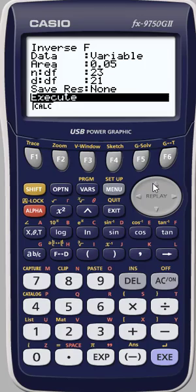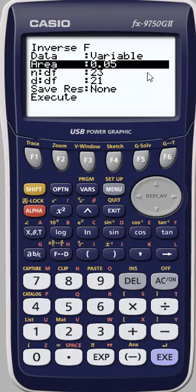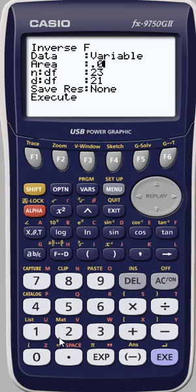Now, to conduct a two-tailed test, we would simply take half of alpha, 0.025.